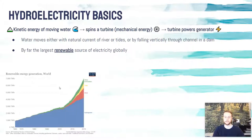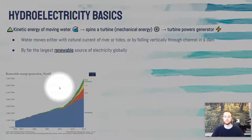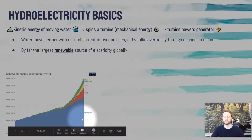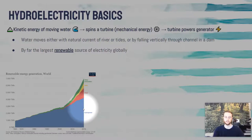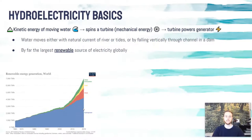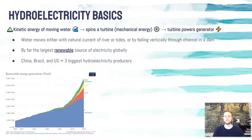If we take a look at a graph of global renewable energy generation, we'll see that hydropower is far and away the biggest source of renewable energy globally. We should also know that China, Brazil, and the United States are the three biggest producers of hydroelectricity globally.